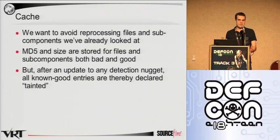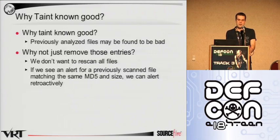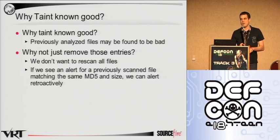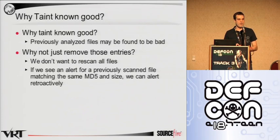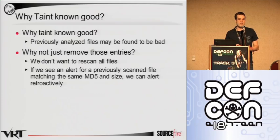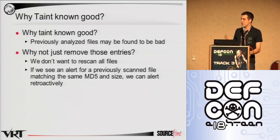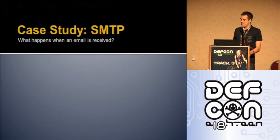Now you might ask why we mark them as tainted instead of just removing them from the cache altogether. Well the reason for that is because we can't say for sure that we're 100% confident that those files, according to the new detection, are in fact clean. But also, say we get another file that matches the MD5 and size — or whatever signature we're using — we can then alert retroactively on any past events. So if we weren't able to detect it with the old detection but we do detect it with the new detection, all past events before that new detection was instituted will trigger an alert.